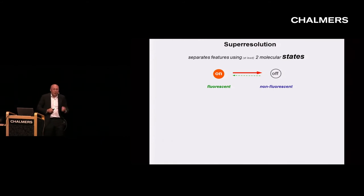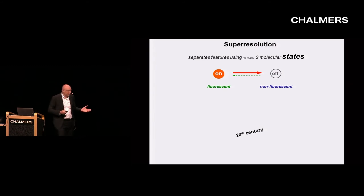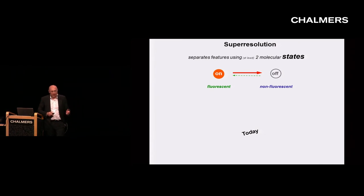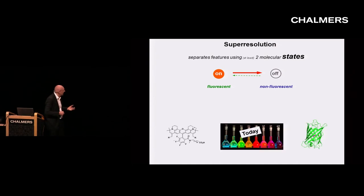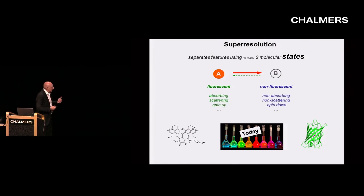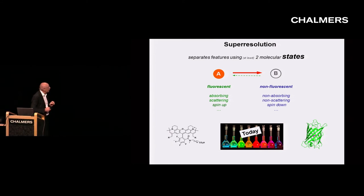What we do in order to separate is transiently prepare the molecules in two different states to make them distinguishable. In the 20th century, you needed good lenses because separation was done by focusing. Now it's not the optical companies that determine the spatial resolution — it's the chemistry. The molecules and their states give us the performance, the spatial resolution, and the contrast. You can generalize this concept further: absorption/non-absorption, scattering/non-scattering, spin-up/spin-down — you can come up with a super-resolution scattering microscope if you find the right states. This journey is continuing.